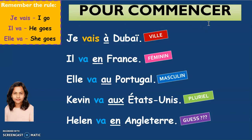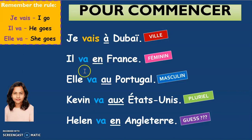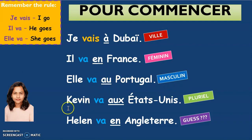Pour commencer — let's do a bit of recap. Je vais à Dubai means I'm going to Dubai. When it's a city name like Dubai, you write 'à' right in front of it. Il va en France means he goes to France — 'en' is used because France is a feminine word. Elle va au Portugal — Portugal is a masculine word, so you have 'au' in front of it. Kevin va aux États-Unis — Kevin goes to the United States. United States being plural, we have 'aux' in front of it.